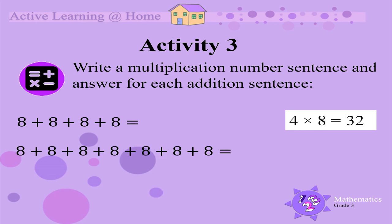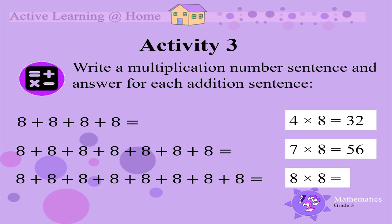Adding 8 seven times can be written as 7 times 8, and 7 times 8 is 56. Adding 8 eight times can be written as 8 times 8, and 8 times 8 is 64.